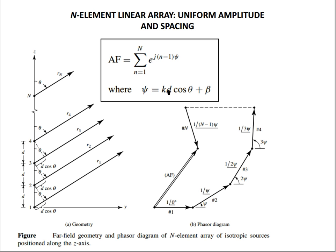Psi equals kd·cosθ + beta. It is only kd·cosθ + beta equal to zero. For theta equal to zero degrees, to get maxima you will get beta equal to minus kd. Then psi equals zero: beta plus kd equals zero, giving beta equal to minus kd. For theta equal to 180 degrees, you will get beta equal to plus kd.